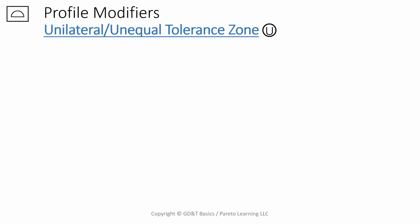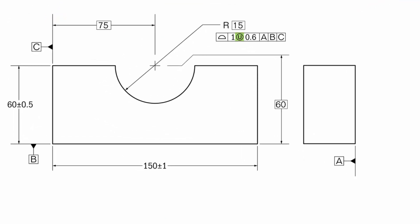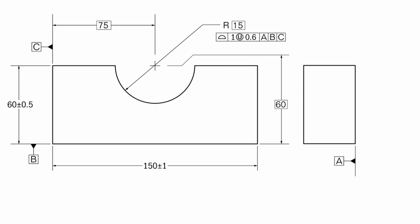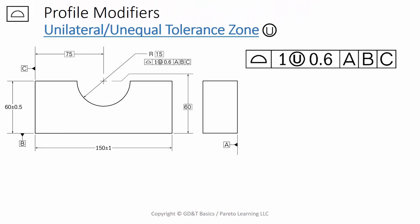This brings us to our unilateral or unequal tolerance zone symbol. You can see the symbol in the feature control frame right here. And you'll probably also notice that there's another number added to the feature control frame, after the U. In this feature control frame, we have the 1, which would specify your total tolerance. This is the value to the left of the U.